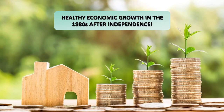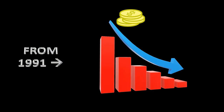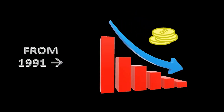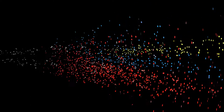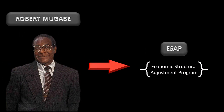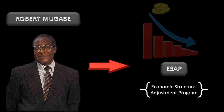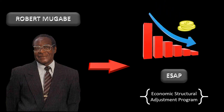In the case of Zimbabwe, it was actually experiencing healthy economic growth from the 1980s after their independence from the British. It was from 1991, from the advent of the new ZANU-PF government in Zimbabwe, that the economic slowdown began. The president, Robert Mugabe, introduced the Economic Structural Adjustment Program, or ESAP, which had serious negative effects on its economy.